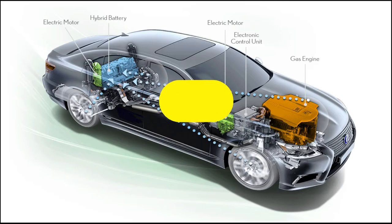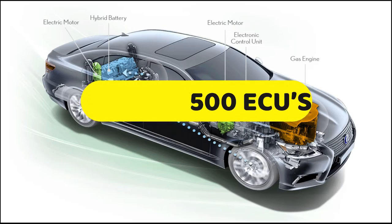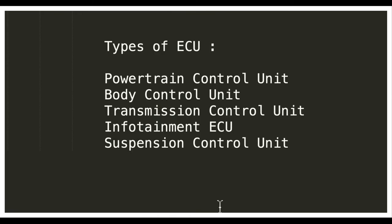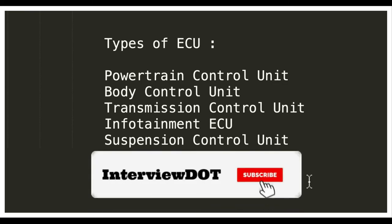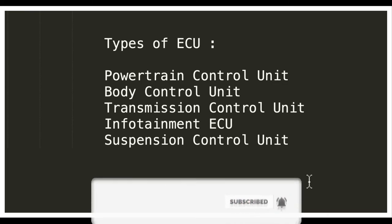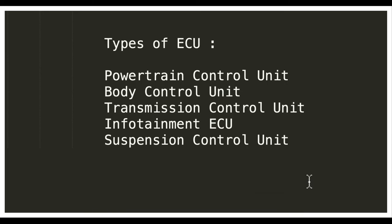Can you guess how many ECUs are placed inside a car? Approximately 100 to 500 ECUs are placed inside a car. Some of the ECUs present include: the powertrain control unit, body control unit, transmission control unit, infotainment ECU, and suspension control unit — and there are many more. For example, a threshold for CO emission level can be set, and if the car emits more than the threshold level, the ECU will alert the user by collecting sensor information.